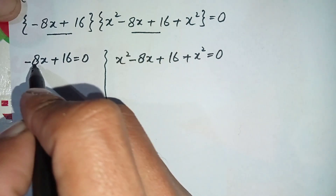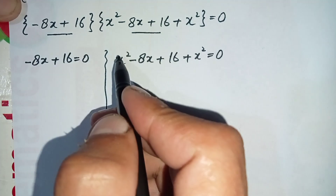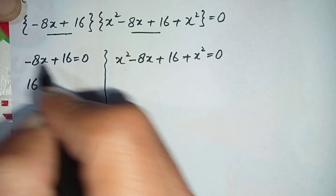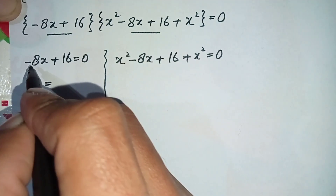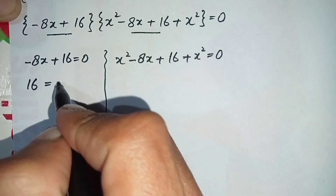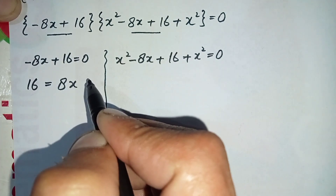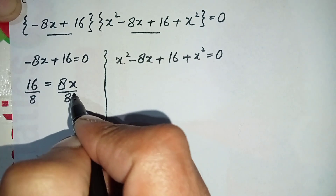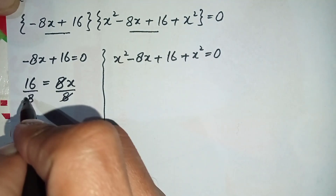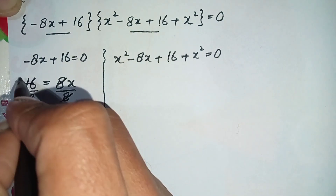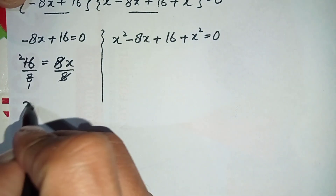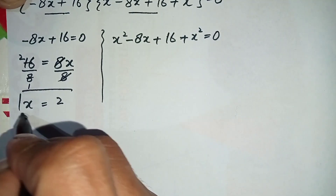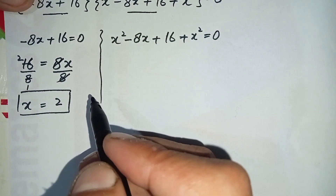For the first equation, minus 8x plus 16 equals zero. Shifting the negative term to the right-hand side gives 16 equals 8x. Dividing both sides by 8, the 8s cancel and we get x equals 2. This is the first possible solution of the exponential equation.